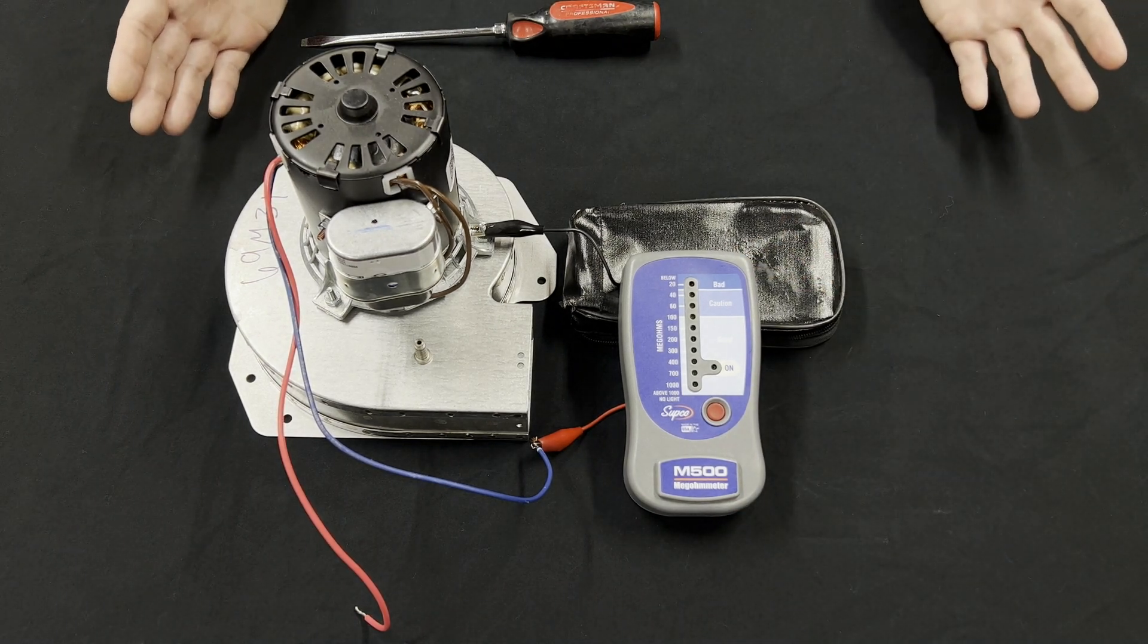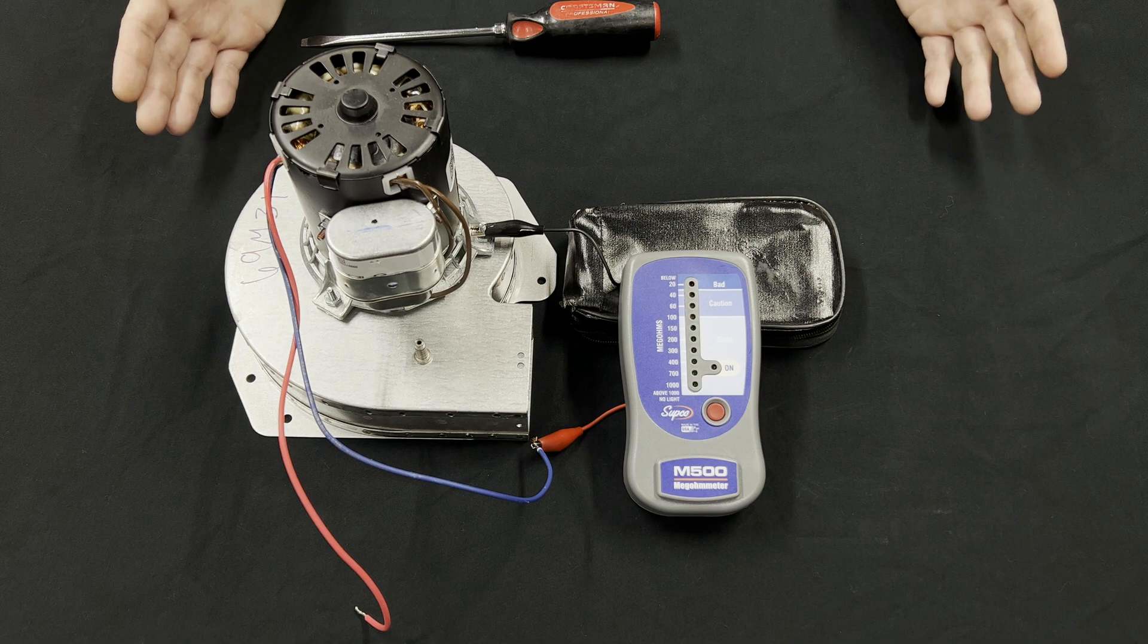That's the basics of using the Subco M500 megameter to check insulation on motor windings.